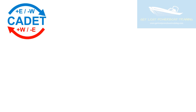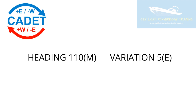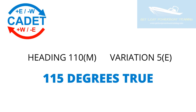Let's look at some examples. If I'm given a magnetic heading of 110 degrees and I want to plot it on the chart, I need to change it to true. My heading is 110 degrees magnetic and my variation is 5 degrees to the east. Looking at the CADET example, I'm going from magnetic to true, so I'm going to add east. 110 magnetic plus 5 degrees of easterly variation gives me 115 degrees true — a heading I can now plot on the chart.